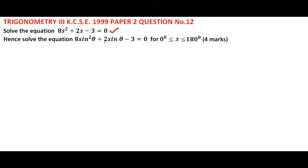So this question, we start with the first one. This is a quadratic equation and therefore we can write it like this: 8s² + 2s - 3 = 0. We can factorize and write it like this.